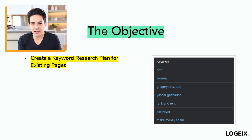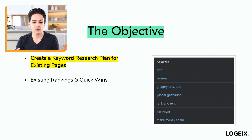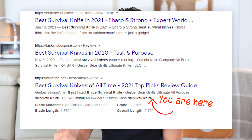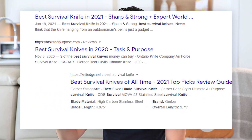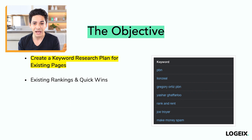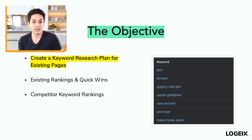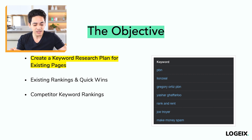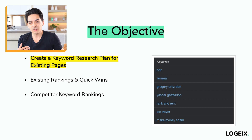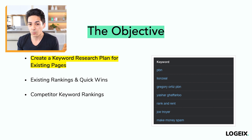The objective here is to create a keyword research plan for your existing pages. Always start with what you already have. If you already have pages on your website, look at how to get more traffic to those existing pages first rather than creating new ones. A very easy quick win is if you're already on page one for a keyword in position five — it's a lot easier to move from position five to position one than to start from scratch. Beyond that, look at competitor keyword rankings to find what they're ranking for.